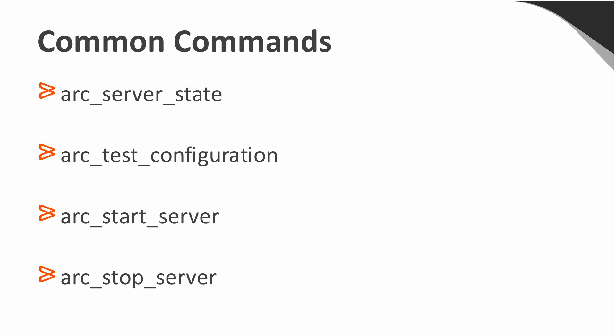Now we're going to go back to our presentation and look at some of the common commands that you can use with workload archiving. To easily see if your workload archiving server is archiving, you'll use the arc server state command — this will return a simple 'server is up' or 'server is down' when you run this. It's also possible to test the connection to the enterprise manager and see which one you are connected to by using the arc test configuration command. When you've initially installed workload archiving, it'll be in a down state, so you need to use the arc start server command to start the server so it can begin archiving. And there might be times when you need to stop the workload archiving server — for this, you'll use the arc stop server command.